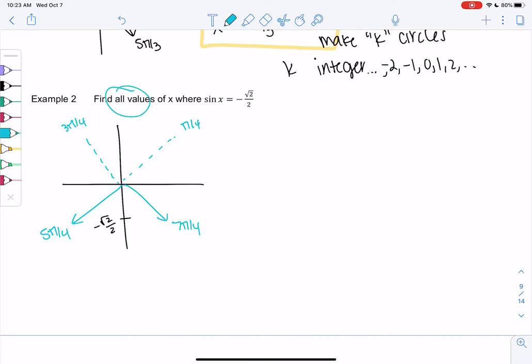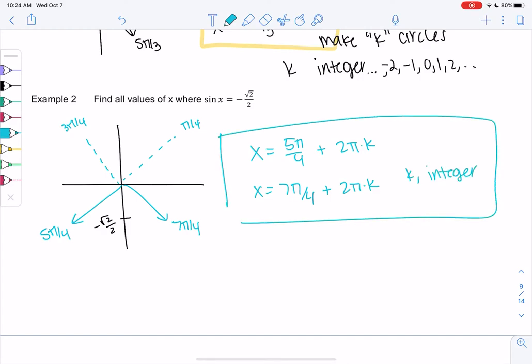We're finding all values, so not just 5 pi over 4 and 7 pi over 4. I could immediately hit 5 pi over 4, I could go 2 pi and then add 5 pi over 4, I could go 2 pi, 4 pi and then hit 5 pi over 4. We can go backwards which would be 2 pi minus 5 pi over 4. So x will just be 5 pi over 4 plus however many circles, 2 pi k, and x will be 7 pi over 4 plus 2 pi k, where k is an integer. That represents all the different possible ways you could land there.